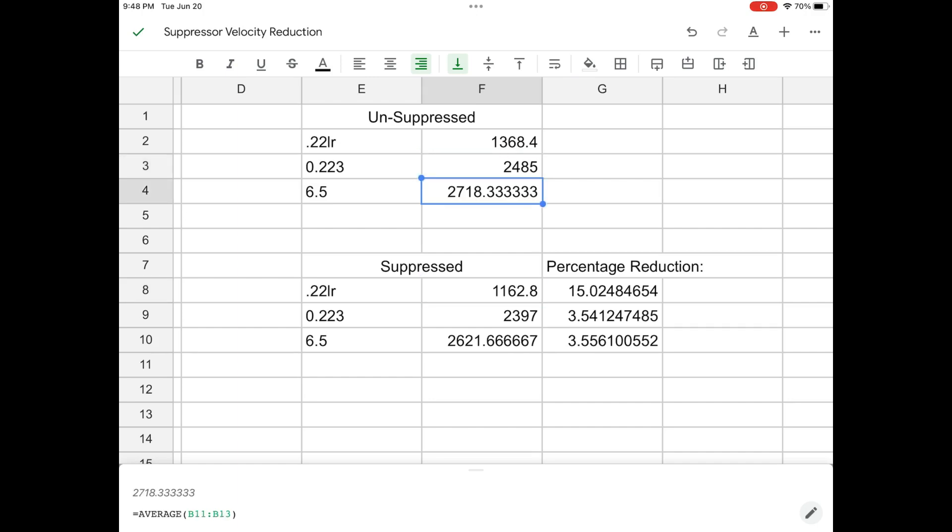And then the 6.5 Creedmoor at about 2,700. Looking at the suppressed data, we see a 15% reduction in the .22 long rifle, which was more than I thought.